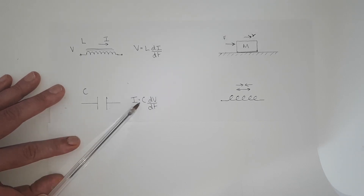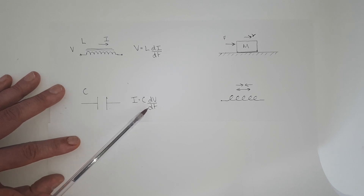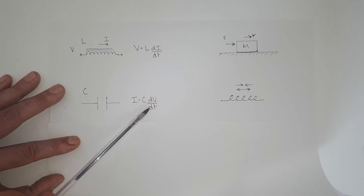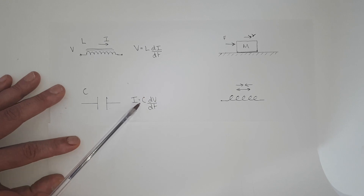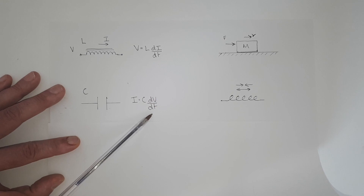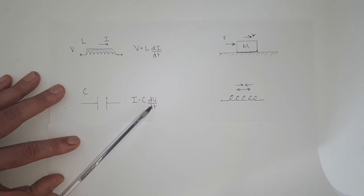If we look at the equation for the capacitor, for a given current and given capacitance we know how quickly the voltage will change on the capacitor. If I keep the current the same but increase the capacitance, then the rate of change of voltage goes down. So we can see that the capacitor or the capacitance acts like an impedance for the rate of change of voltage.